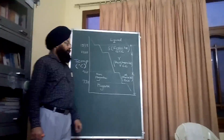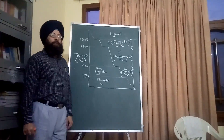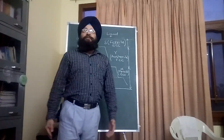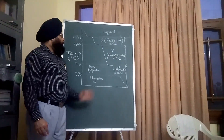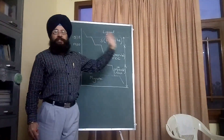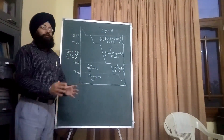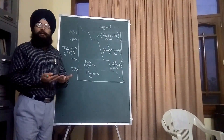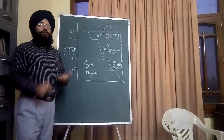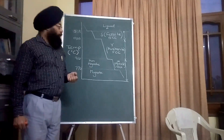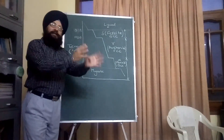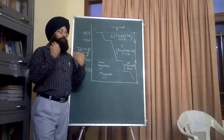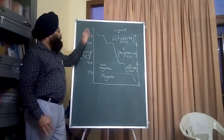Today I am going to discuss a very basic but important topic of metallurgy: the cooling curve of pure iron. This is a prerequisite topic because when you study steels or the iron-carbon diagram, you need to understand the cooling curve of pure iron first. Steel is nothing but an alloy of carbon in iron, so the major constituent of steel is iron.